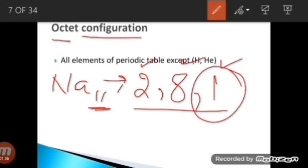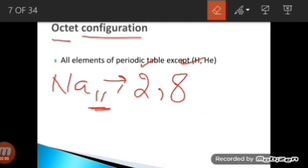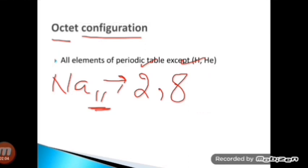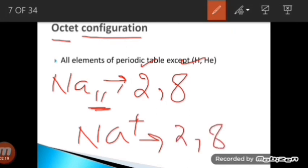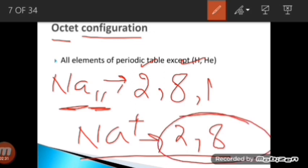There is one electron in the outermost orbit of sodium, so sodium has one valence electron. It is much easier for sodium to release this one electron than to accept seven more to fulfill its octet. When it loses this electron, it now has eight electrons in the outermost orbit — it has attained octet configuration. The sodium ion has electronic configuration 2, 8, whereas neutral sodium is 2, 8, 1.